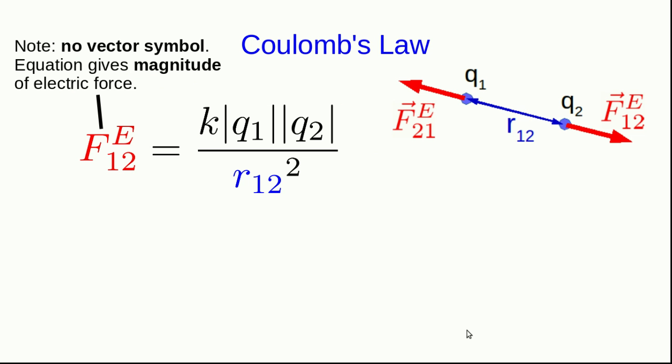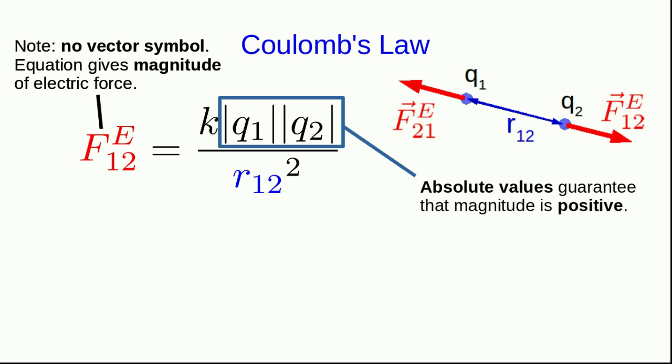Notice that I have not written a vector symbol in this equation. Of course, the electrical force, like any force, is a vector, but this equation is not giving us the electric force vector. It's only giving us the magnitude of the electric force. And by definition, a magnitude must be positive. That's why these two q's, q1 and q2, are in absolute values, because of course one or both of those charges could be negative, and so we need these absolute values here to ensure that we get a magnitude that is positive as it should be.